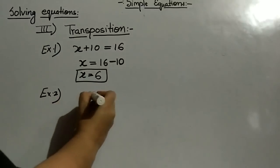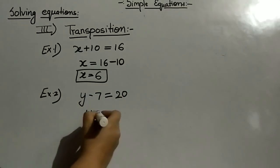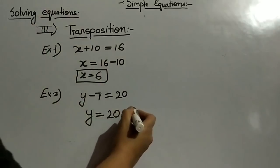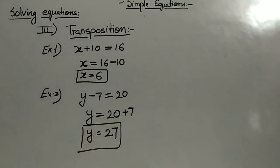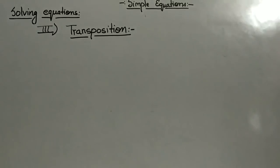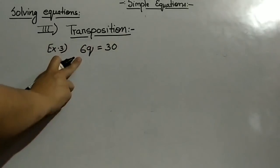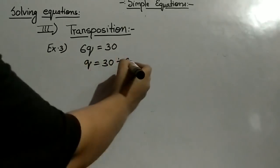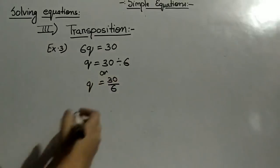Another example: y minus 7 equal to 20. We leave y alone. The 7 is with minus sign; when shifting to the other side it becomes plus. So y equal to 20 plus 7, which is 27. Example 3: 6q equal to 30. 6 is in multiplication; when transposed to the other side it becomes division. So q equal to 30 upon 6, which means q equal to 5.